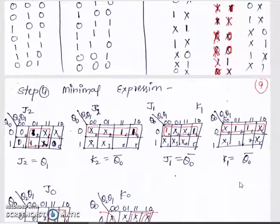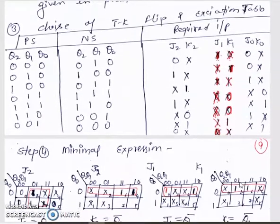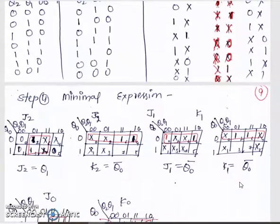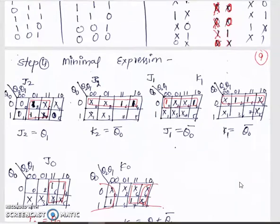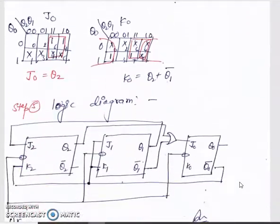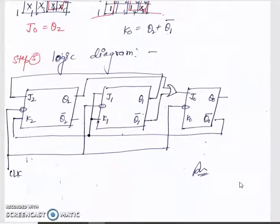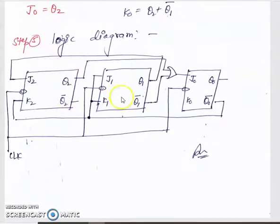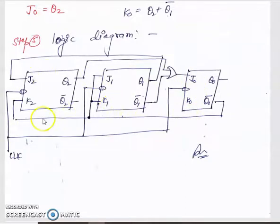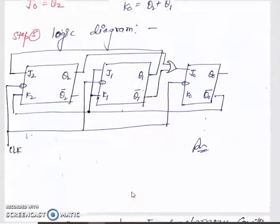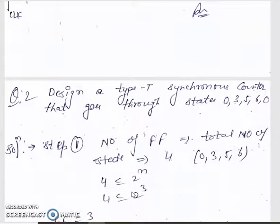The last step is finding the minimal expression using the K-map. With 3 flip-flops, we draw K-maps for J0, K0, J1, K1, J2 and K2. After that we draw the logic diagram with 3 flip-flops and a synchronous clock given to all flip-flops simultaneously. We connect the inputs J0, K0, J1, K1, J2, K2 using the minimal expressions from the K-map.